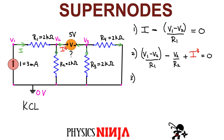For node number 3, we look at what's flowing in and flowing out. Everything is flowing out here, so I put a negative sign in front of each term. I have I star flowing out through the power supply. I have current flowing down through R3, which is V3/R3. All points at the bottom are at 0 volts, so the potential difference is just V3 minus 0. I also have current flowing out through R4, which is V3/R4. So the node 3 equation is: −I_star − V3/R3 − V3/R4 = 0.